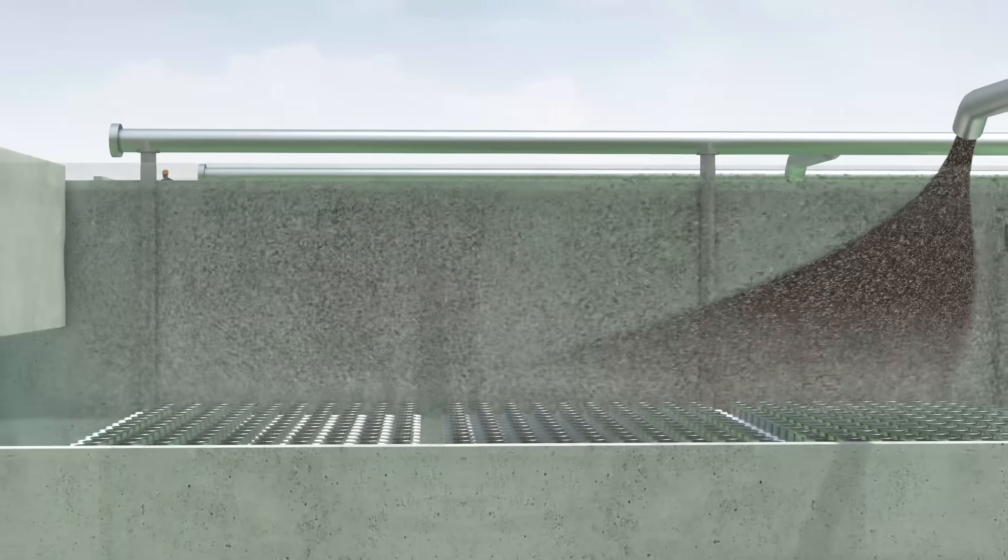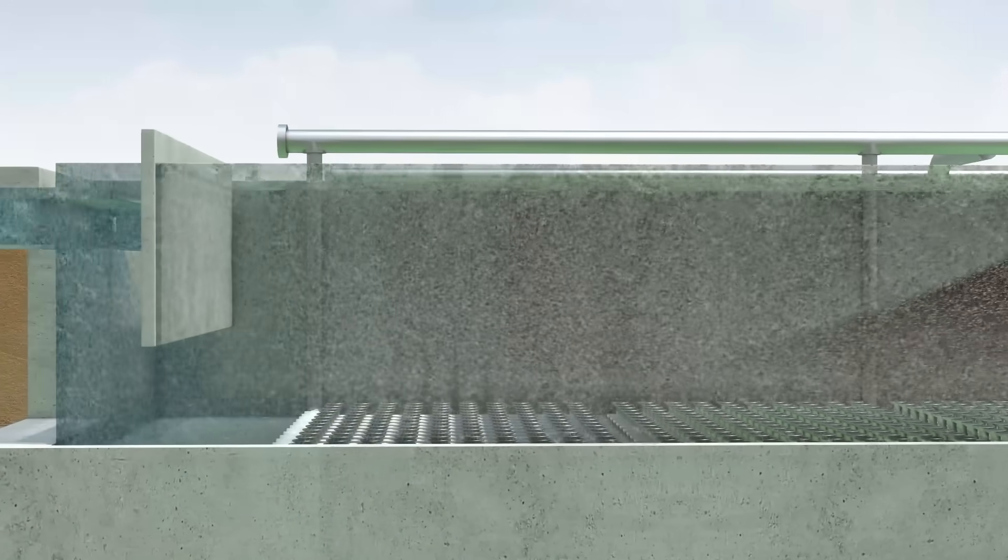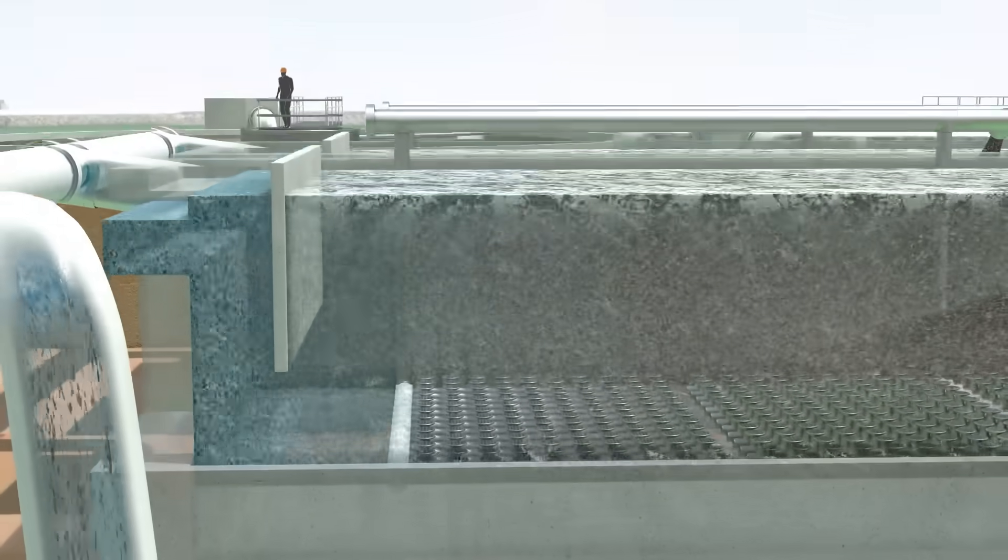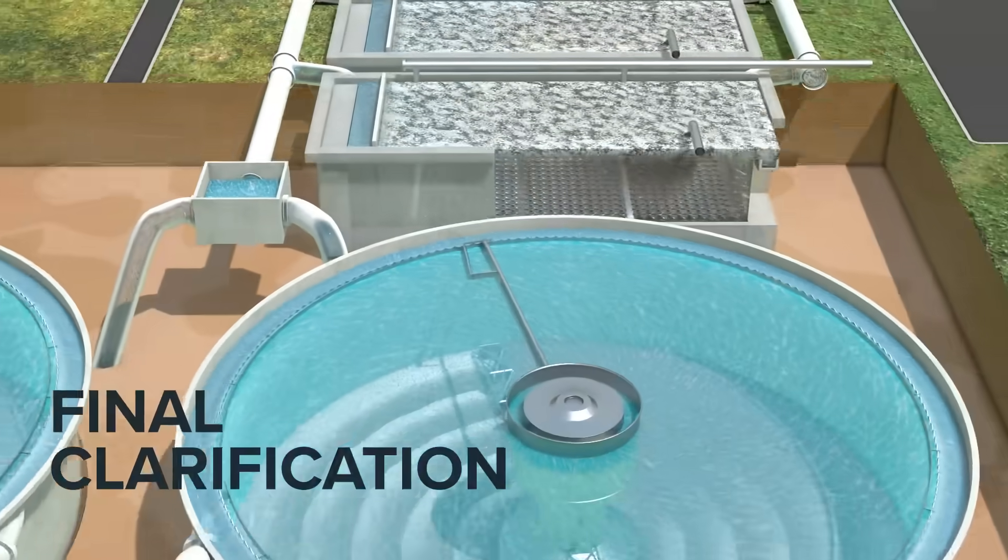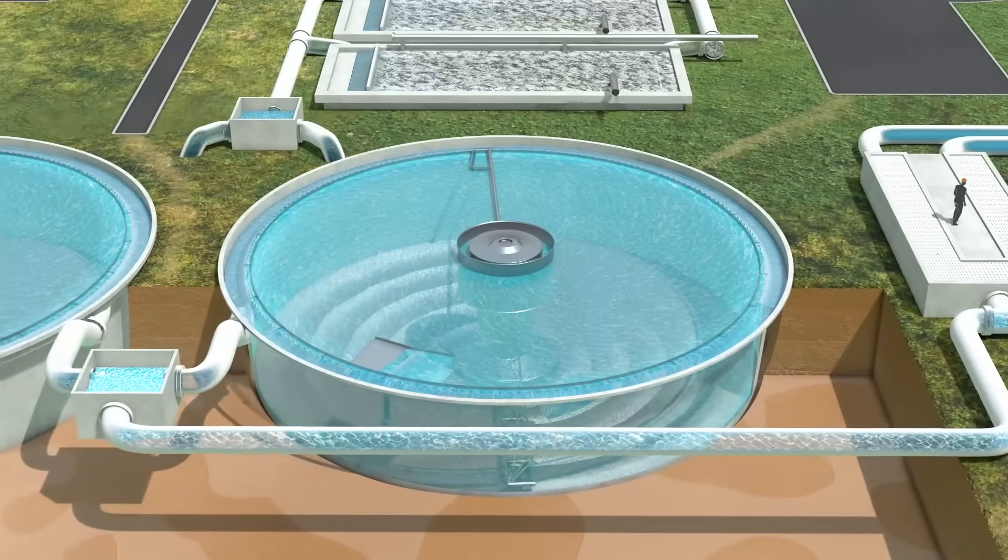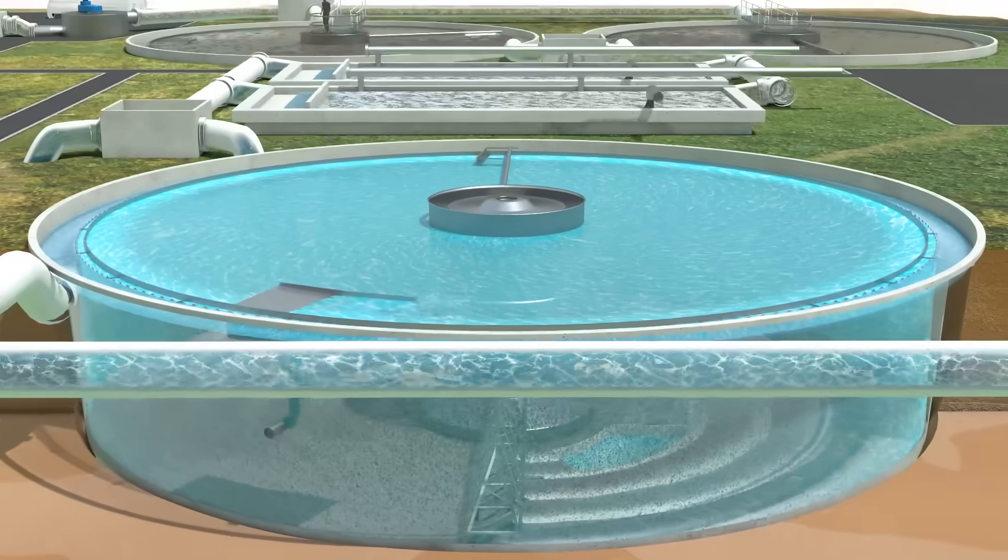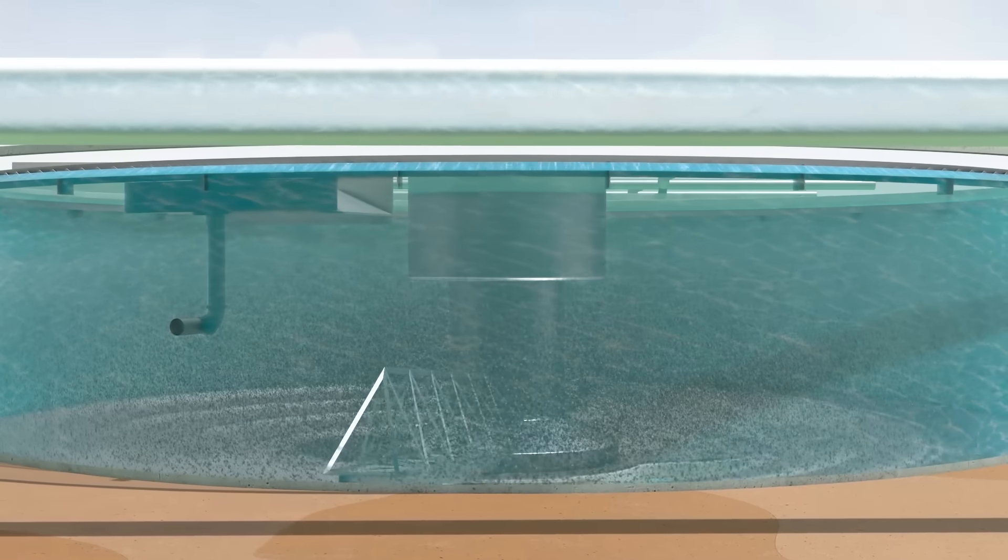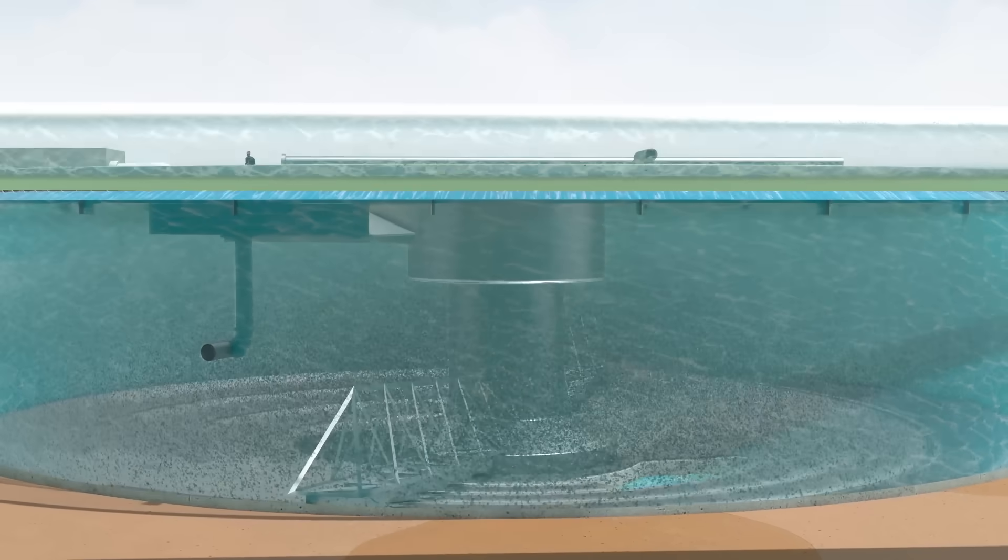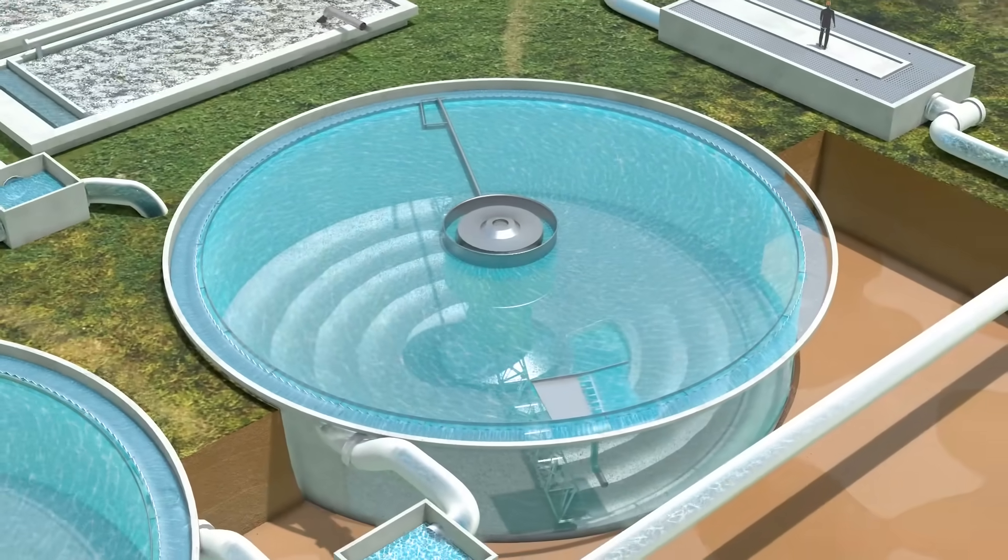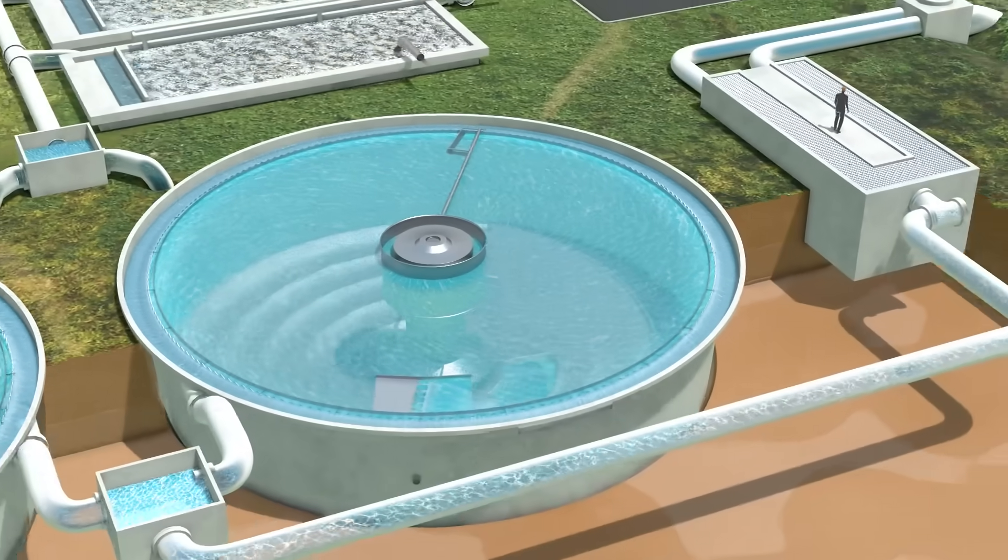The water and flocc mixture travels to final clarification. Here, the flocc sinks to the bottom of the tank. Some of this settled flocc is collected for reuse in the aeration process, as the helpful organisms are still active. Processed water flows over the edge of the tank, en route to final disinfection in a UV light exposure tank.